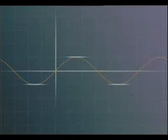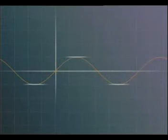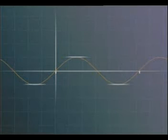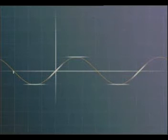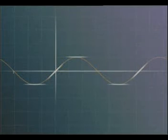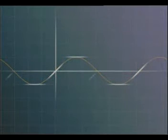At other points, the symmetry of the sine curve can help. The gradient of the tangent at x equals 0 is positive, and it must be equal to the gradient of the tangent at x equals 2 pi. Also, the gradient of the tangent at x equals minus pi must be equal to the gradient of the tangent at x equals pi. They must also both have the same magnitude as the gradient at x equals 0, but be negative.